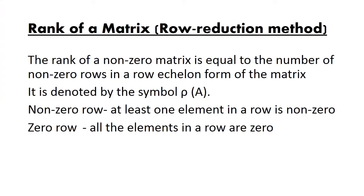Rank of a matrix using row reduction method. The rank of a non-zero matrix is equal to the number of non-zero rows in a row echelon form, denoted by row of A. A non-zero row means the row having at least one non-zero element. A zero row means all the elements in a row are zero.